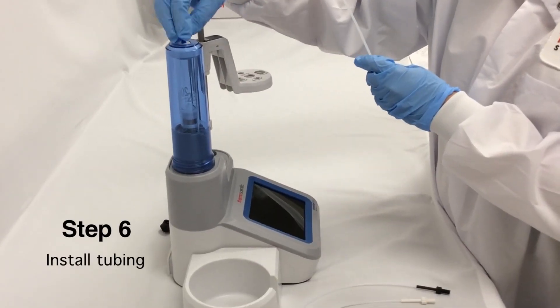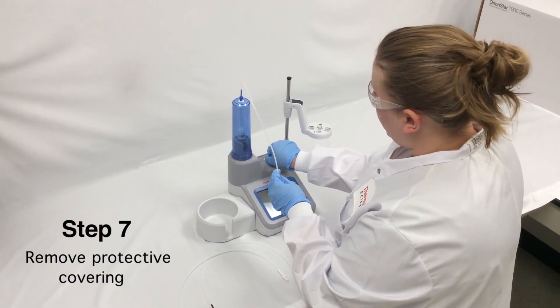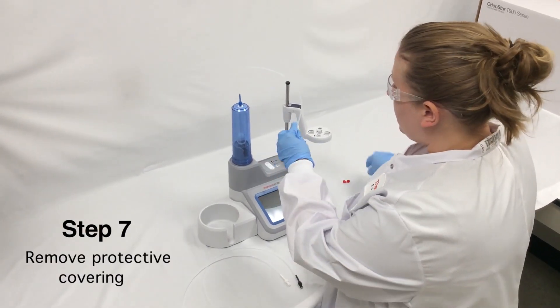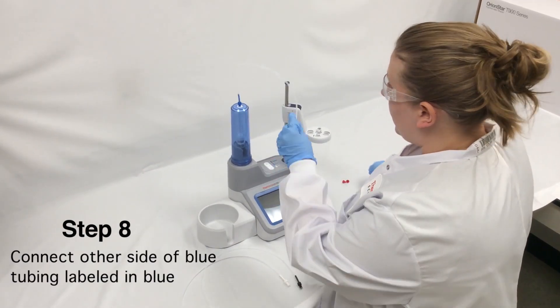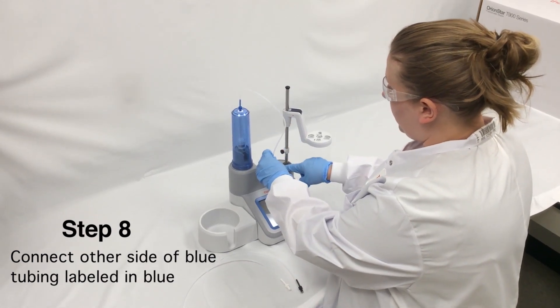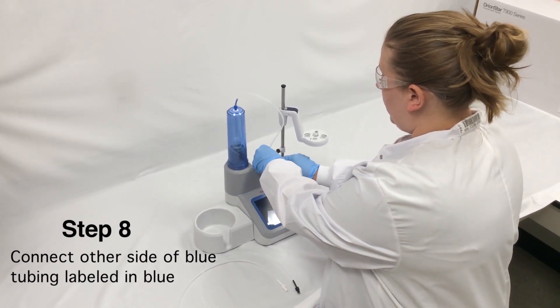Install the tubing by removing the protective covers that prevent dust from getting into the valve. Connect the other side of the blue tubing to the burette labeled in blue.